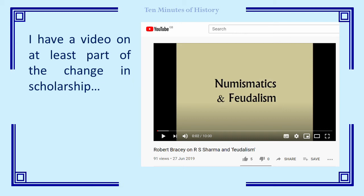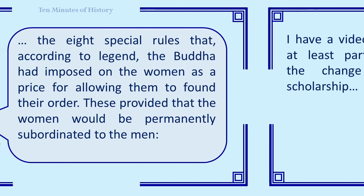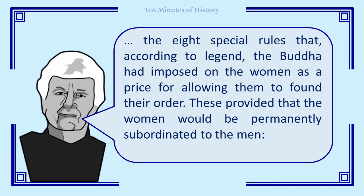Whether there was in fact a decline in trade or an economic collapse are hotly contested issues, and scholarship has moved on since 1989, but this isn't really important for Falk's main point. She argued that economic pressure would not affect monastic orders equally — that the monks would be able to retain their resources by depriving the nuns of theirs — and that the reason for this could be traced to the eight special rules that, according to legend, the Buddha had imposed on the women as a price for allowing them to found their order, which most scholars agree existed to ensure they would be permanently subordinated to the men. Hence the subtitle of the article: the fruits of ambivalence in ancient Indian Buddhism, because she argues that a subtle discrimination resulting from social discomfort with women's independence led to this premature decline.